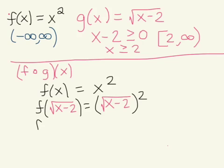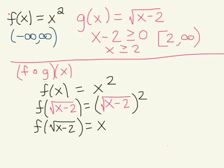On the left-hand side, this is just notation telling you what we're doing — we found f of the square root of x minus 2. On the right-hand side, we're simplifying the square root of x minus 2, squared. The square root and squaring are opposite operations, so they cancel each other out and we're left with x minus 2.